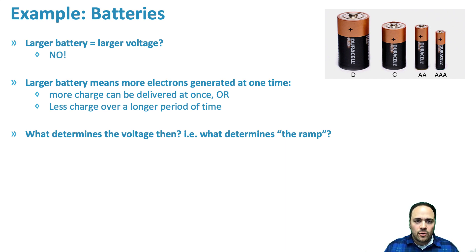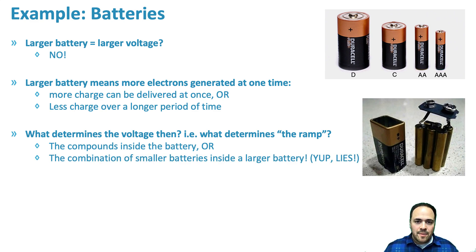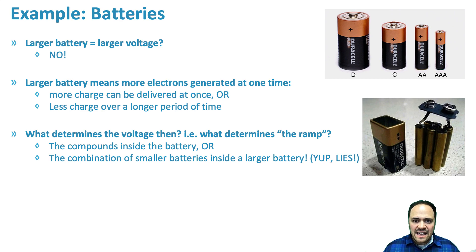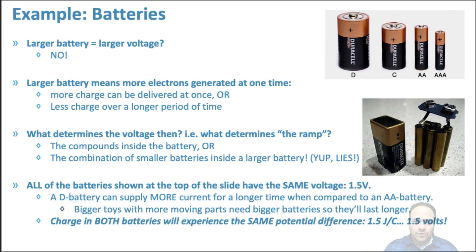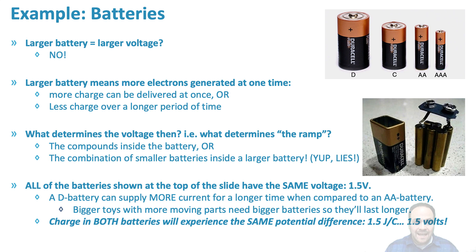What determines voltage in a battery if not its size? It comes down to the chemical compounds inside, and/or the combination of smaller batteries within. In fact, the inside of a 9-volt battery is actually made up of six 1.5-volt batteries — 1.5 times 6 equals 9. Larger batteries have more reactants to produce more electrons at one time. Larger toys with more moving parts use larger batteries, but every coulomb of charge in any of those batteries experiences the same potential difference: 1.5 joules per coulomb, or 1.5 volts.